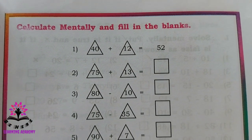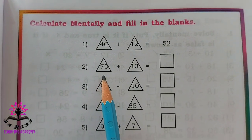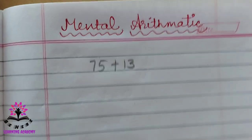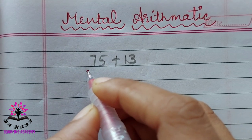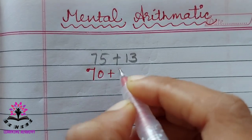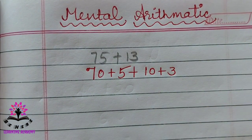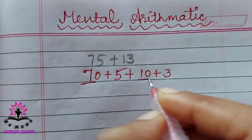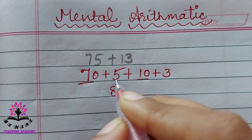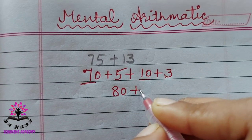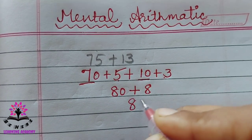Calculate mentally and fill in the blanks. 40 plus 12 is 52 — the answer is already given. For 75 plus 13: split 75 as 70 plus 5, and 13 as 10 plus 3. Then 70 plus 10 is 80, and 5 plus 3 is 8, so 80 plus 8 is 88.